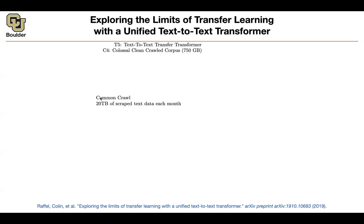What is Common Crawl? There is 20 terabytes of scraped text from the Internet. These are textual data, and it's 20 terabytes per each month. So when I was mentioning that the entire Internet is in front of you, I wasn't joking. This is the entire Internet.